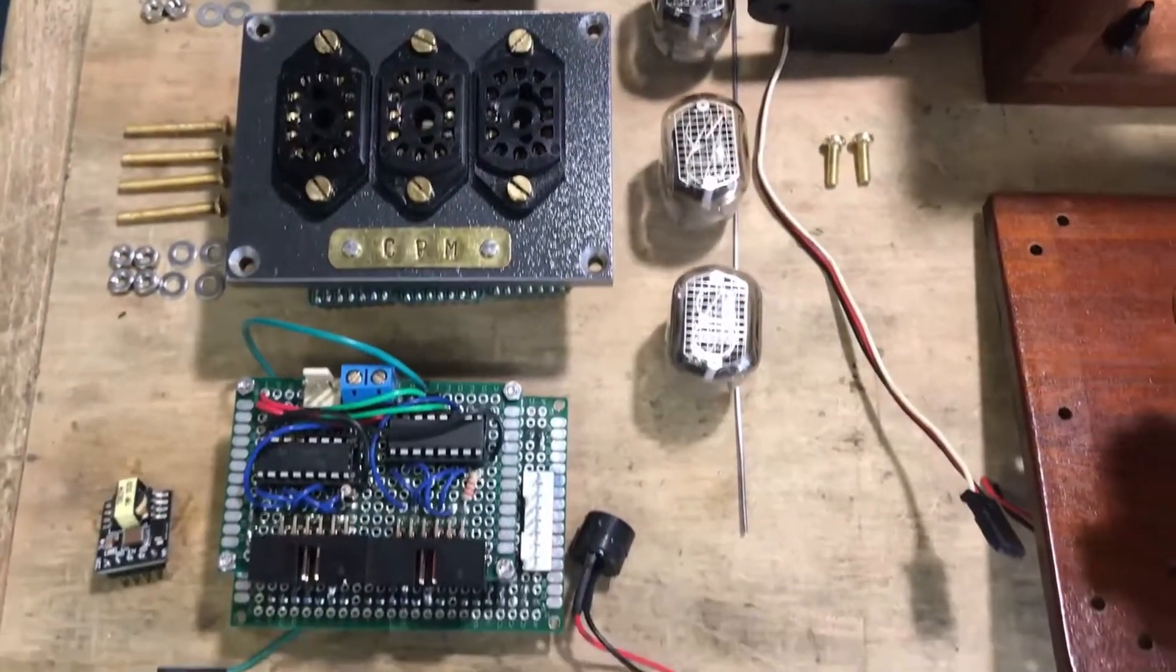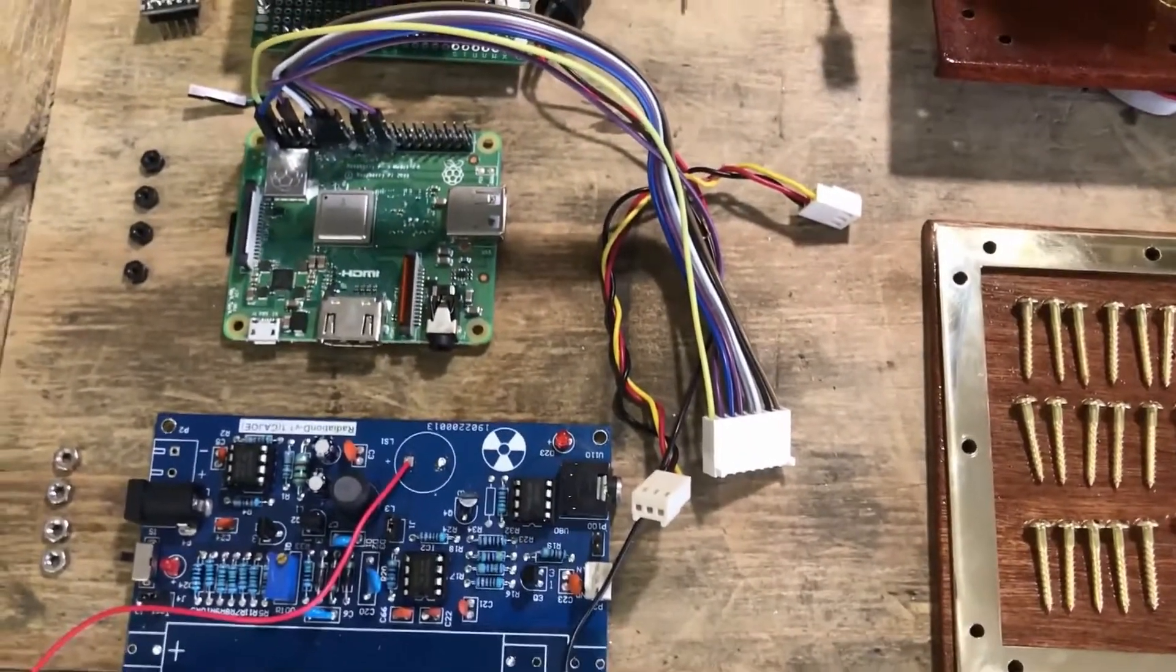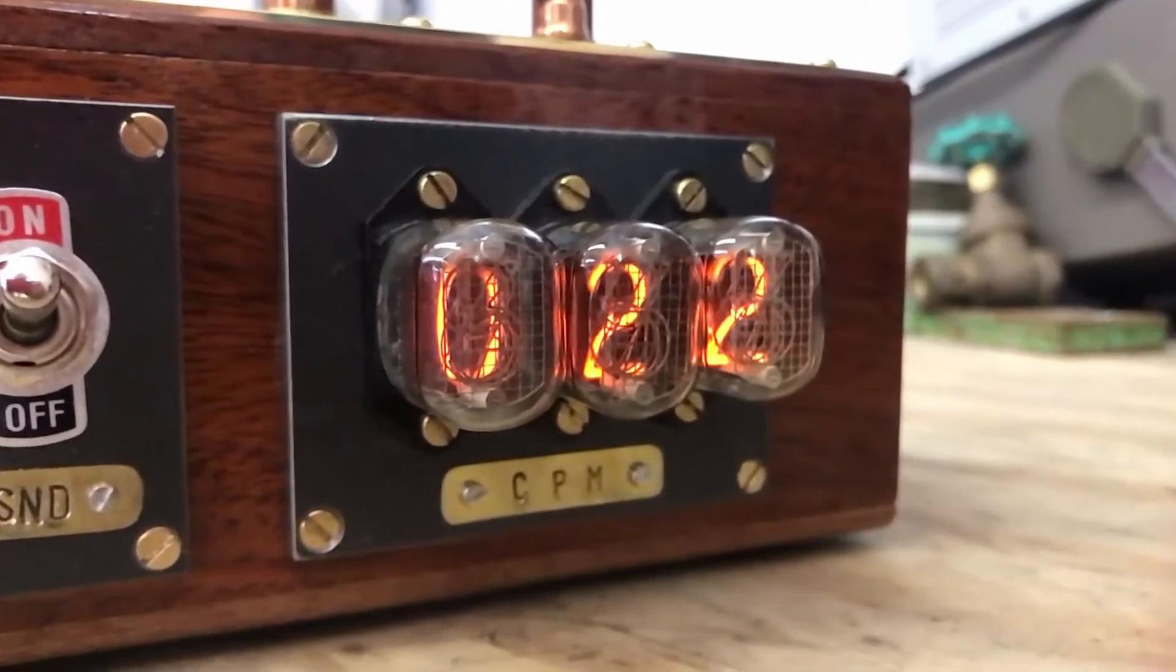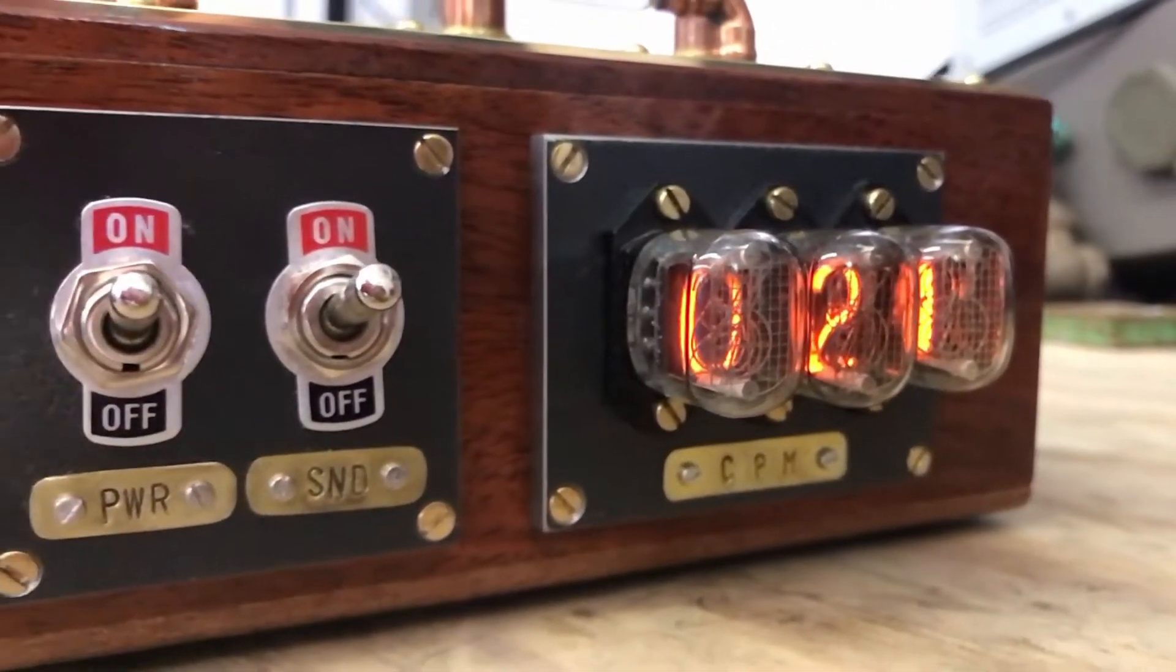Everything you see here, pretty much apart from the copper pipe, is custom made. So that includes the woodwork, the electronics. The nixie tubes themselves are from eBay, but the steel plate that they're mounted on is custom made.